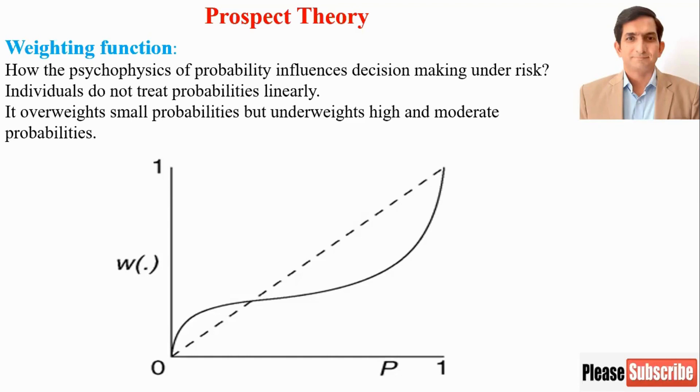If you see the diagram that is drawn by Daniel Kahneman and Amos Tversky, it says if there is low probability, people consider it 0. And if there is high probability, people round it to 1. And if they are not able to decide between 0 and 1, then they exaggerate the difference.